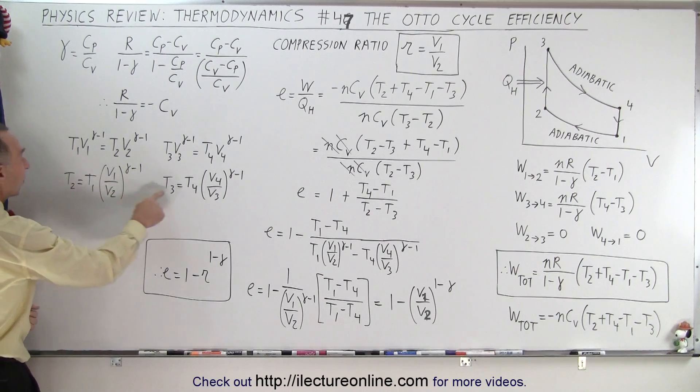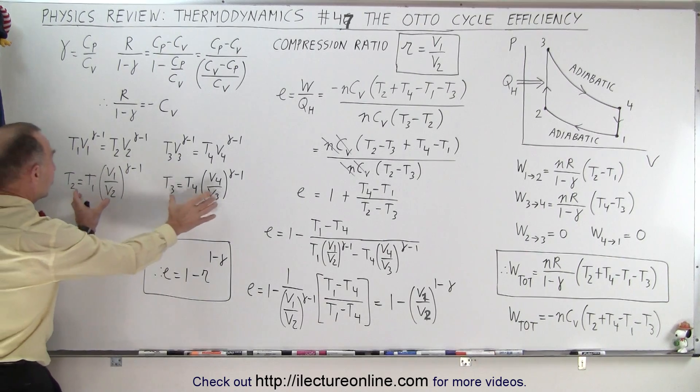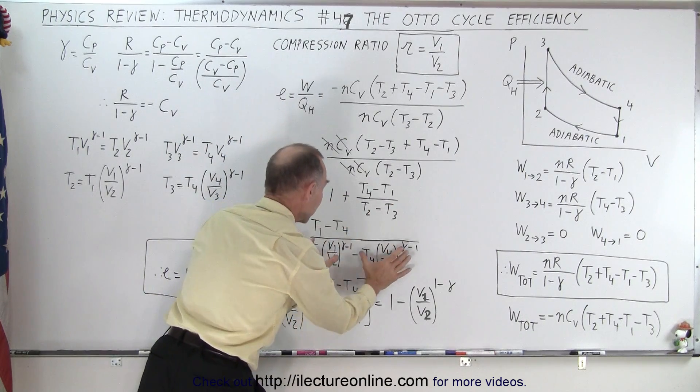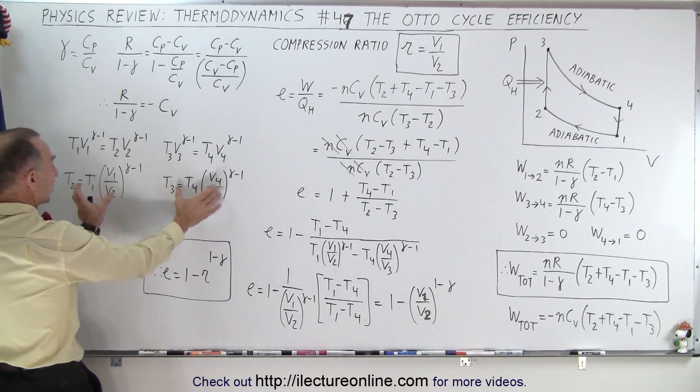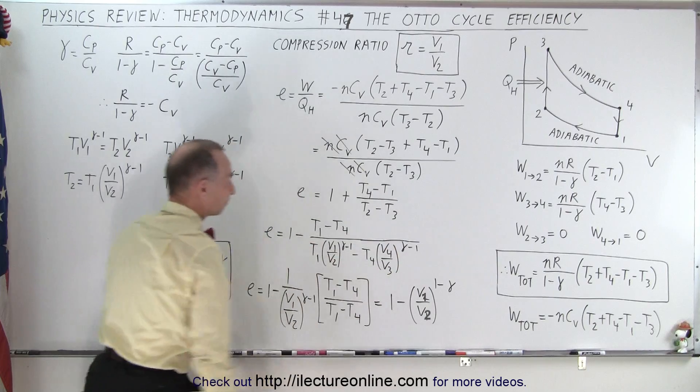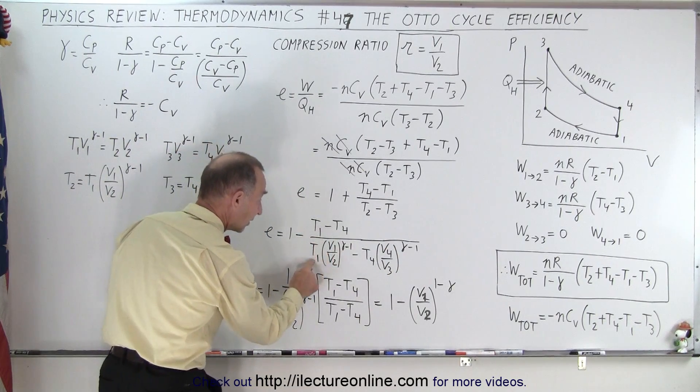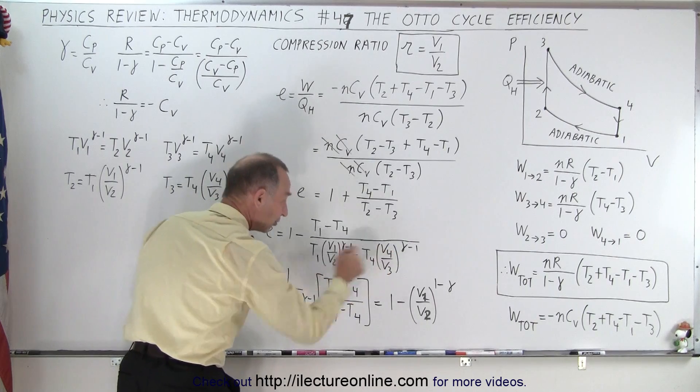Solving this for T2 and solving this for T3, we have these two values here that can then be substituted for T2 and T3. Simply grabbing these two and plugging them over there. There's a reason for that because we see T1 minus T4 and a T1 minus T4 there.